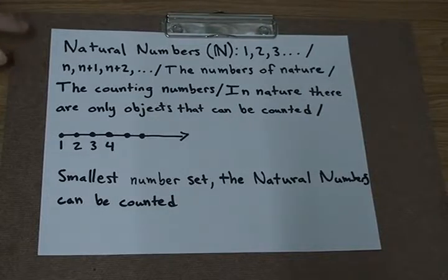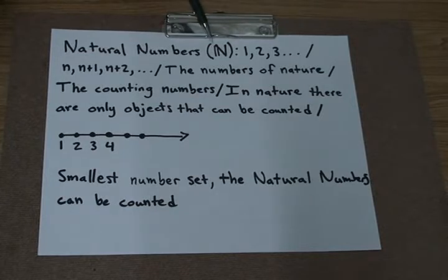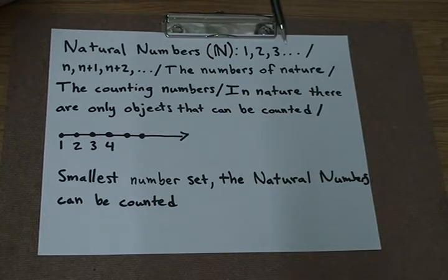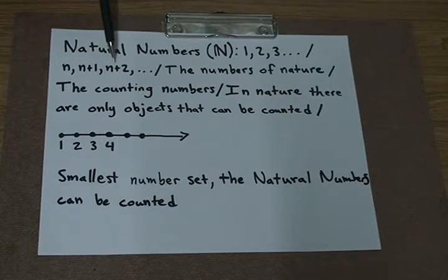The first type of numbers are the natural numbers. This is going to be the smallest number set. The natural numbers has the symbol of a bolded N. We can draw this by just drawing an extra line on the N itself. Some examples of natural numbers are 1, 2, 3 going in order, and these dots represent that it continues on as far as we can count. In general, we would represent the natural numbers as the letter n, n+1, n+2, and these would count and continue on forever.